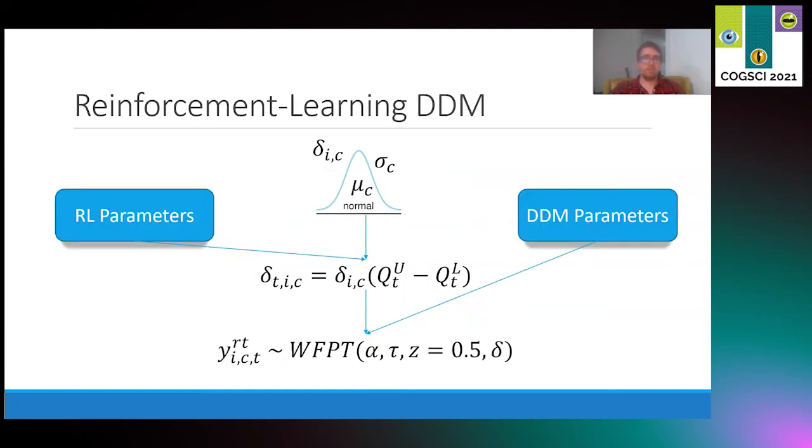To combine both of these two models, we fit both in tandem. We took the individual drift rate parameter and had that scale the expected value difference between both doors for a trial-specific drift rate. The reinforcement learning parameters inform the Q values, which can modulate drift rate, and the DDM parameters inform the Wiener first passage time distribution. With this formalization, we have a different interpretation of drift rate. When we talk about drift rate with this model, we're actually talking about this scalar, which is the weight that expected value differences could have in evidence accumulation. A large scalar would suggest that participants are accumulating evidence that is value-driven, whereas a small scalar suggests value-free decision making for the most part.